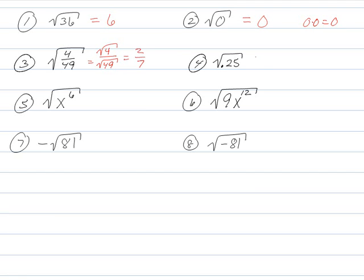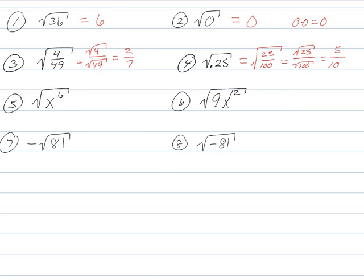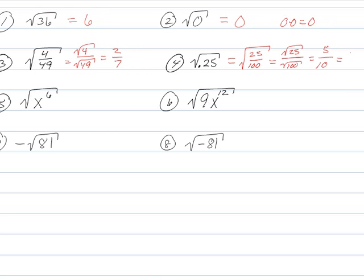This one we can break up into the root of 4 over the root of 49, so 2 sevenths. Now, if you want to look at this one in particular, this is 0.25. You actually don't need a calculator to do this in theory, because you could say 0.25 is 25 over 100. Right, 25 hundredths, that's literally what that means, 0.25 is 25 hundredths.